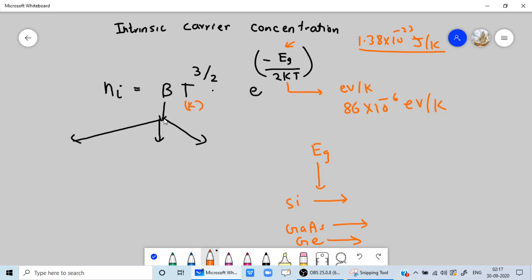It depends upon the semiconductor and then we have temperature in Kelvin. We have a band gap for the given semiconductor. We'll talk about three semiconductors: silicon, gallium arsenide, and germanium.